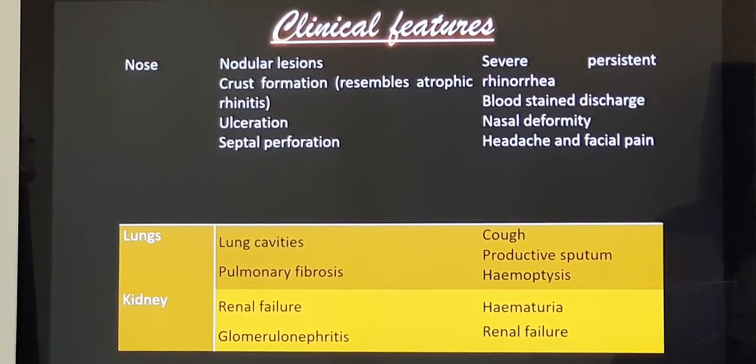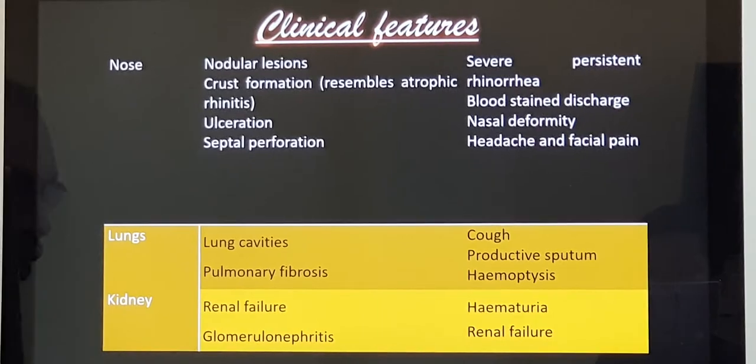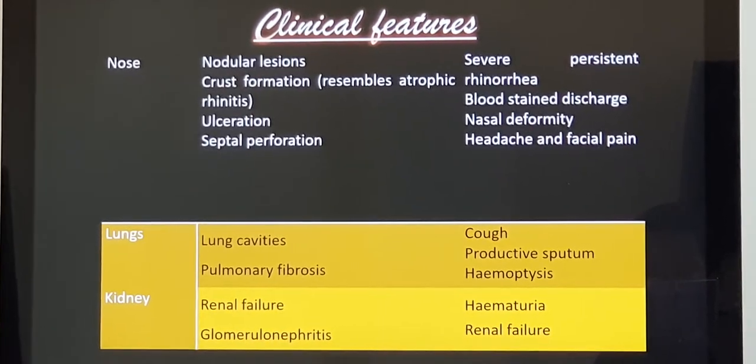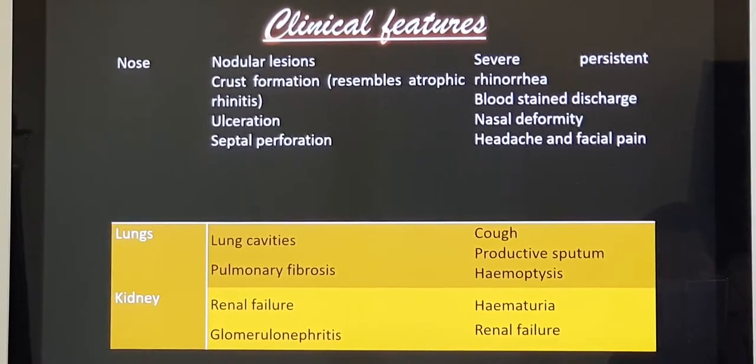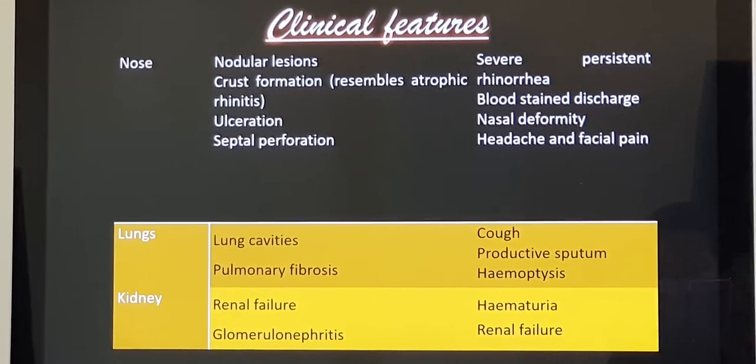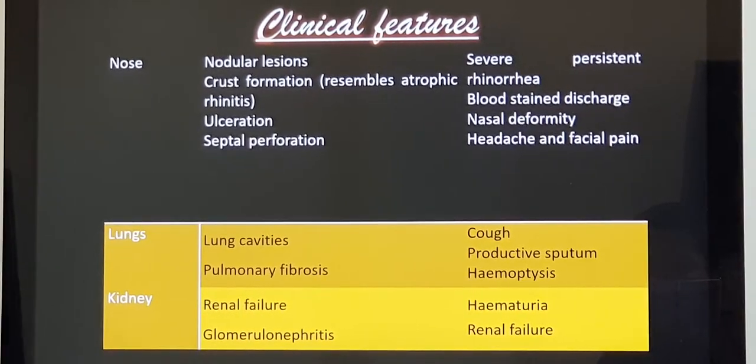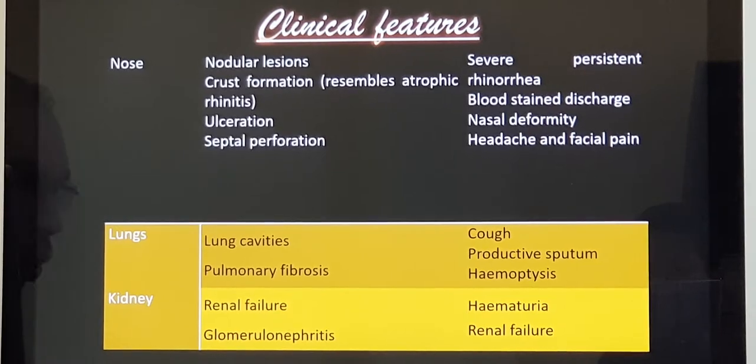Usually the upper respiratory infection has to stop in a week or so. But this becomes persistent and the nasal discharge becomes blood stained and slowly as and when the disease progresses it destroys the whole nose.